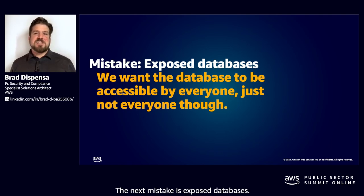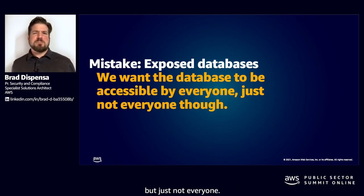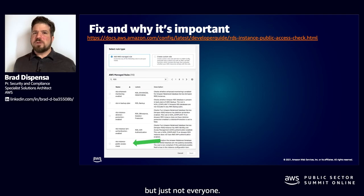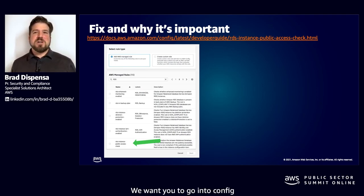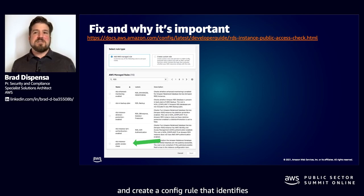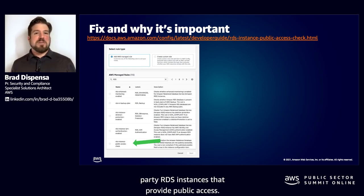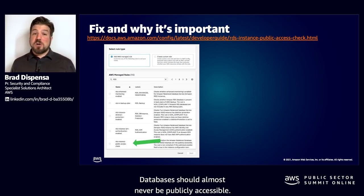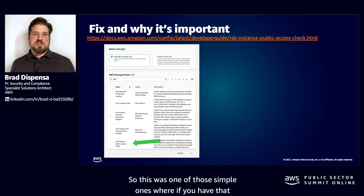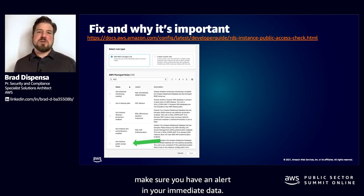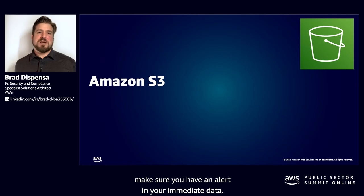The next mistake is exposed databases. We want the database to be accessible by everyone, but just not everyone. The fix is to go into Config and create a Config rule that identifies RDS instances that provide public access. Databases should almost never be publicly accessible, so make sure you have an alert and remediate that.